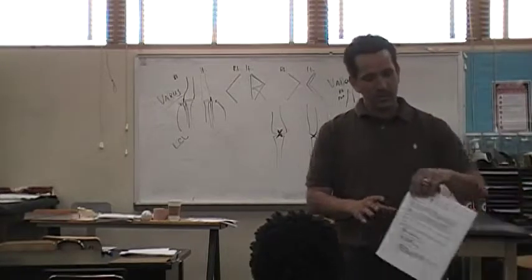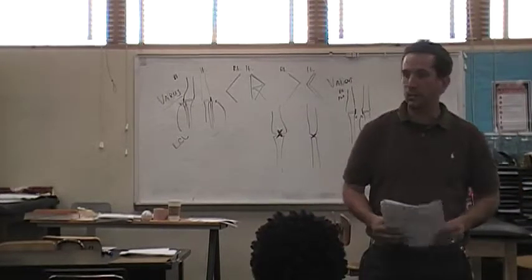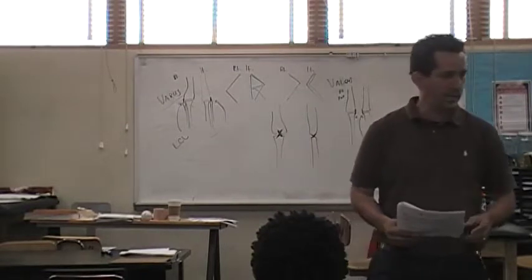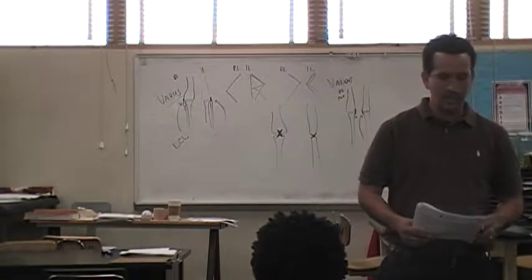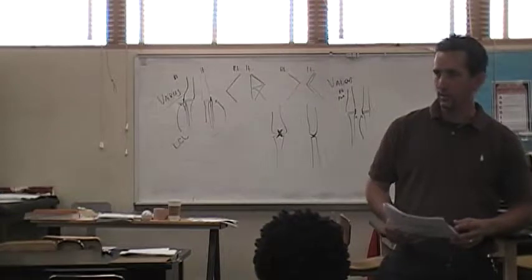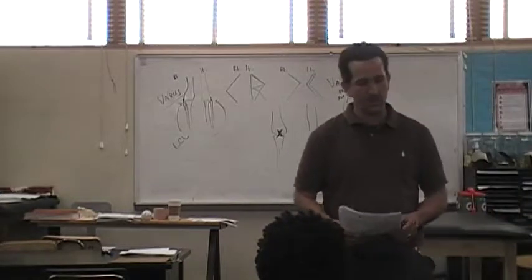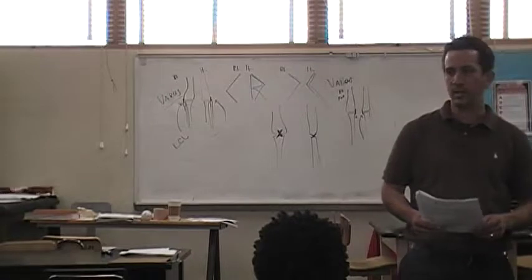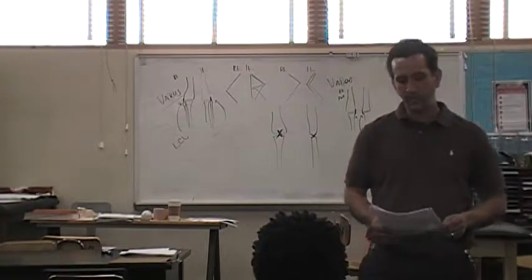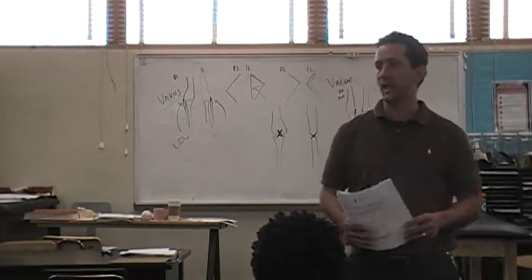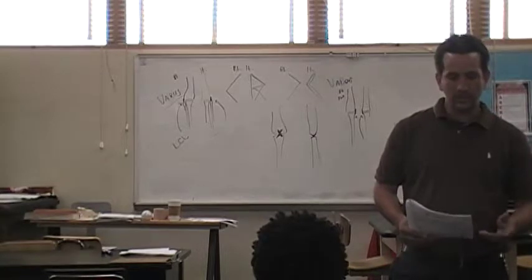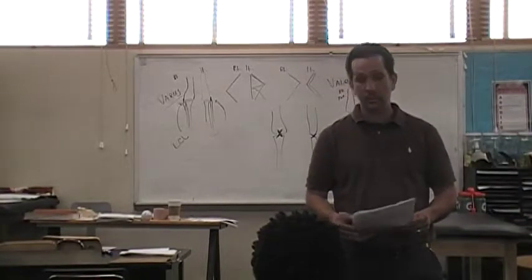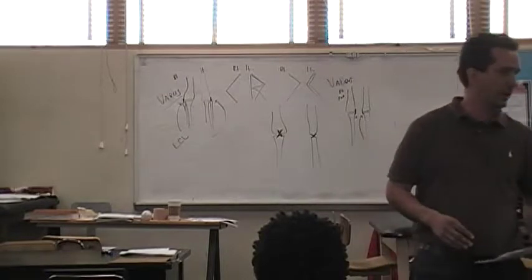We're going to start off with three grades of knee sprains. Grade one is where a few fibers are damaged or torn and it usually heals naturally. Grade two is where more fibers are torn but the ligament is still intact. Grade three is where the ligament is completely ruptured and may require surgery.